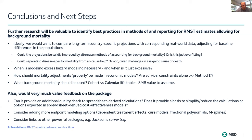What background mortality should be used? Remember, this is a diseased population — it shouldn't necessarily be expected to follow the general population. Should the life tables we're using be cohort or calendar-year based? And what standardized mortality ratio should we be assuming? I'm afraid I end with perhaps more questions than I even started with.